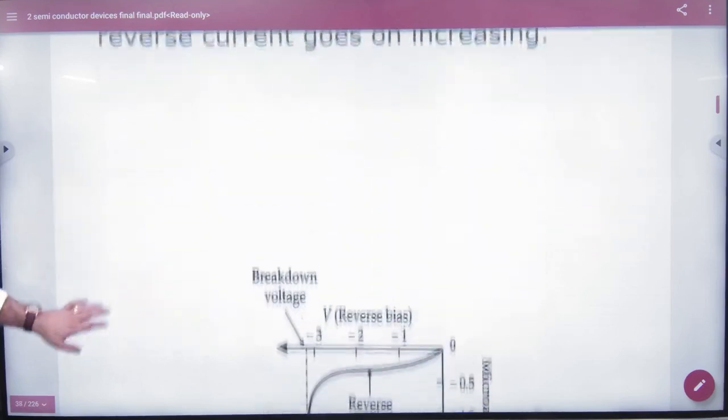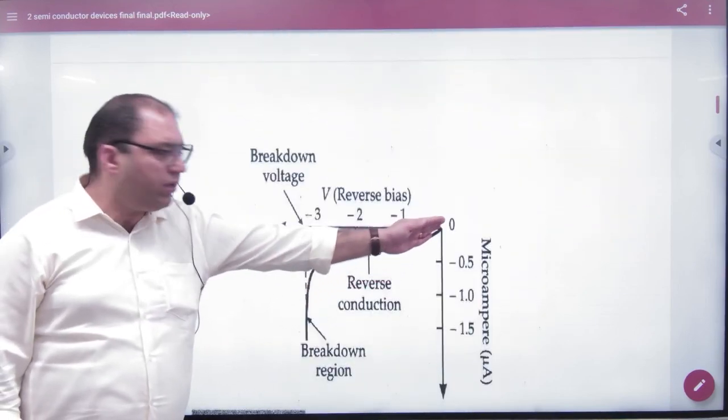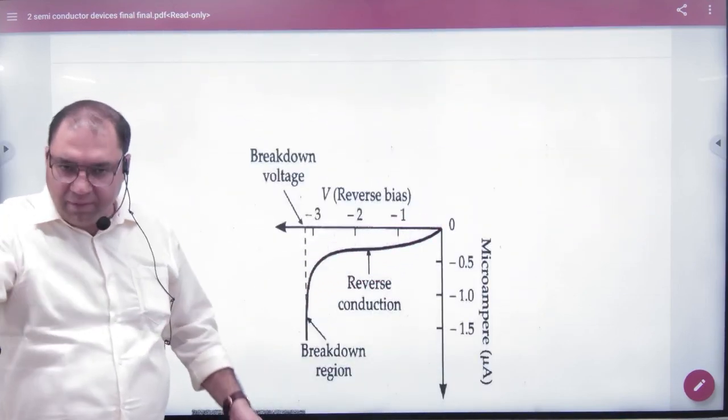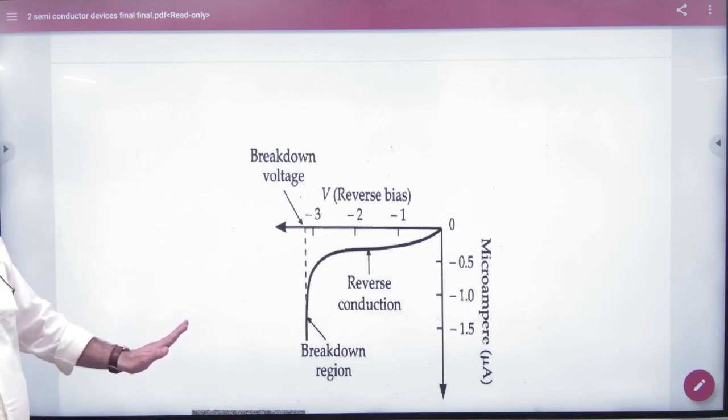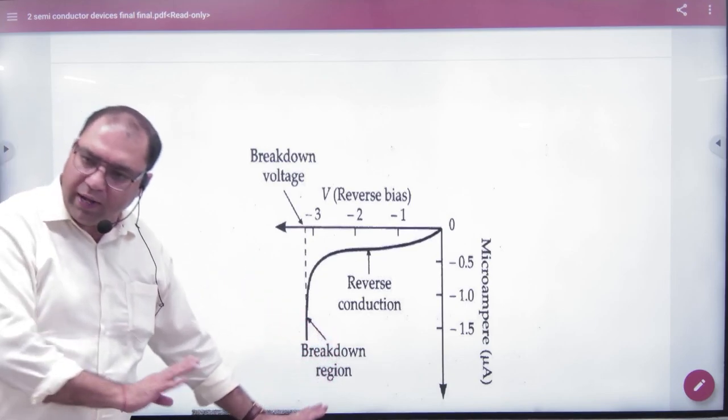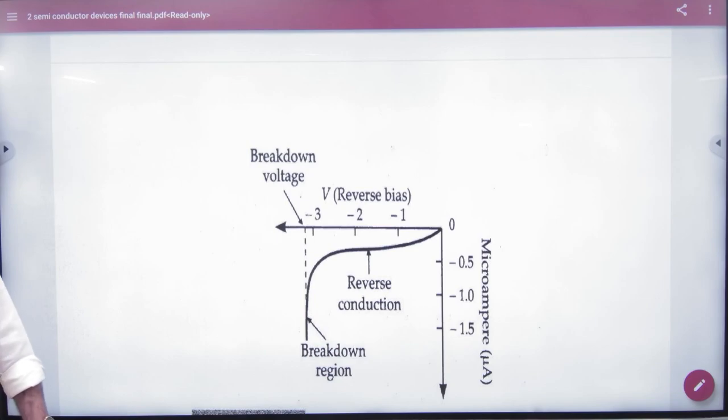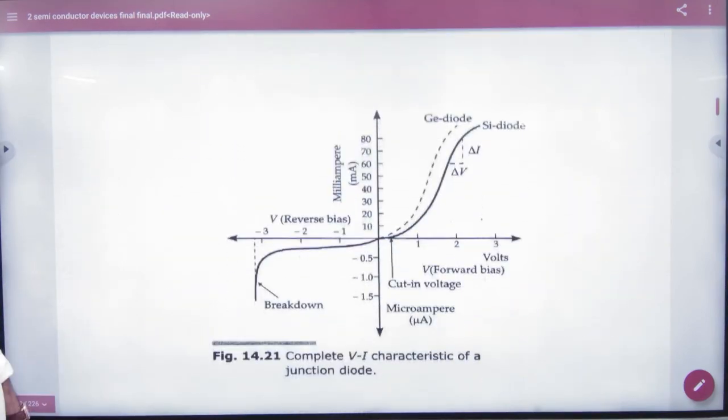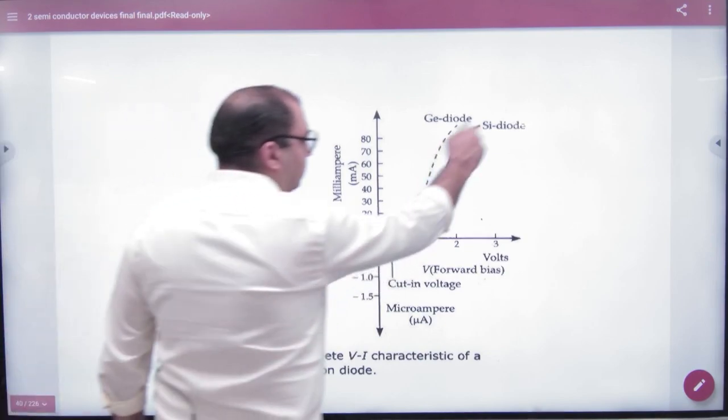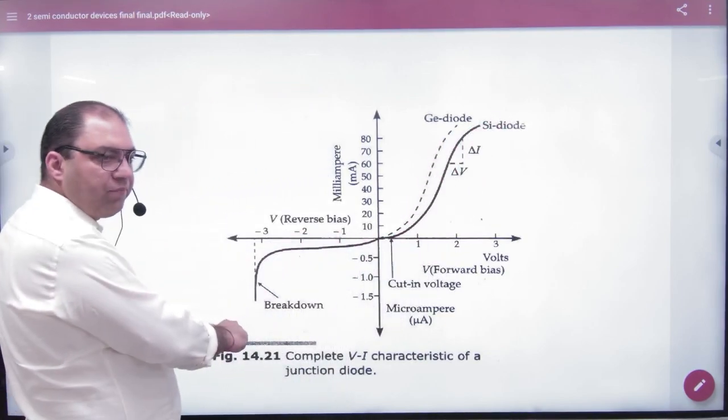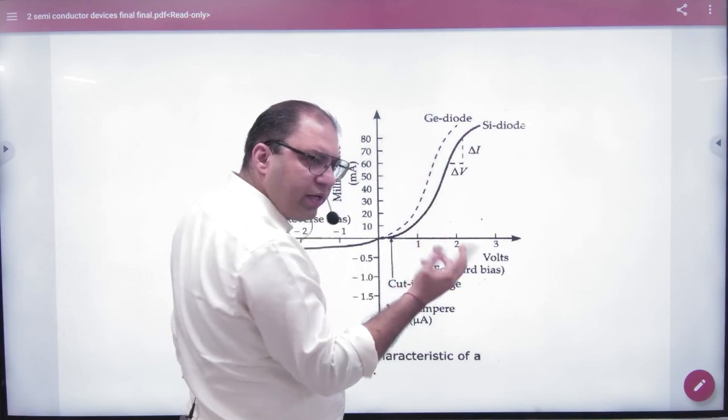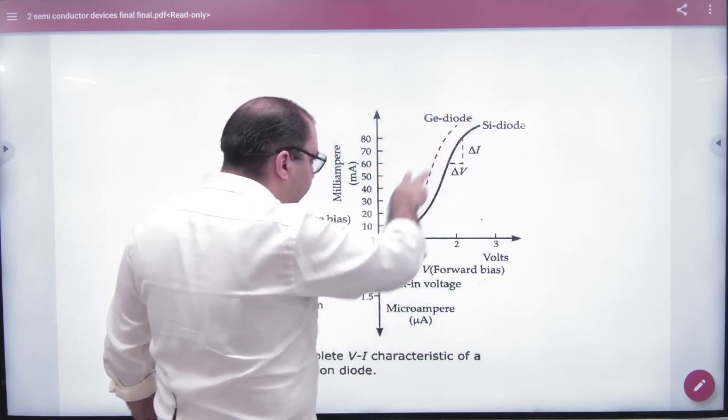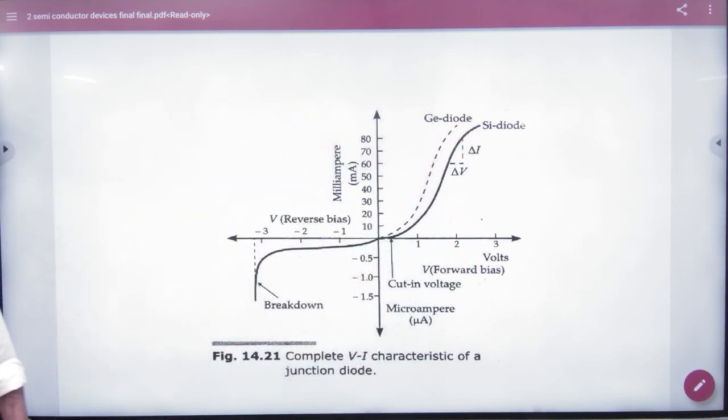So forward and reverse characteristics. When you combine the forward and reverse characteristics, this is forward and this is reverse. This is for germanium and silicon, but it is different from them. But the pattern is this. So this is the characteristics.